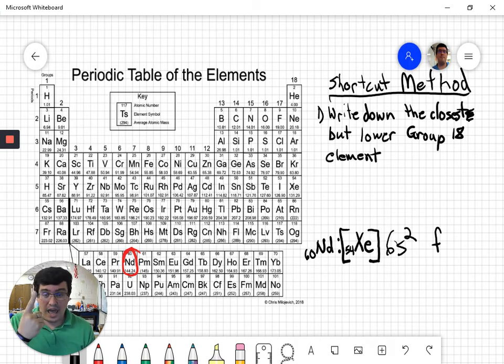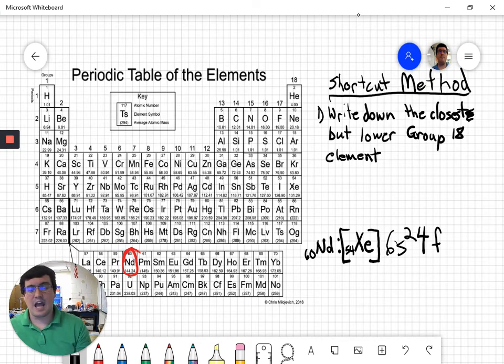If you always remember S, P, D, F, S starts with 1S. P starts with 2P. D starts with 3D. And F starts with 4F. So the first line in the F block is 4F. Just came up with that recently. So this is the 4F line. And how many 4Fs are there? Well, 1, 2, 3, 4. And that gets us to neodymium. So we stop there at 4.